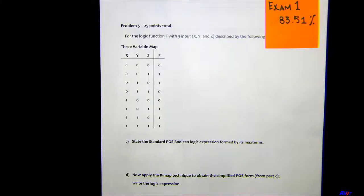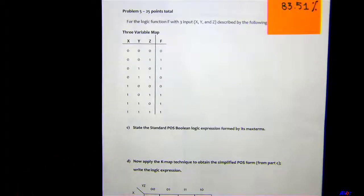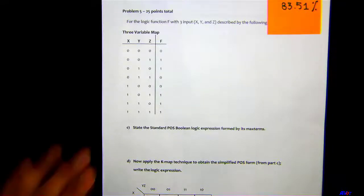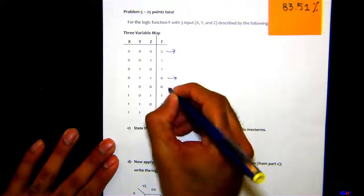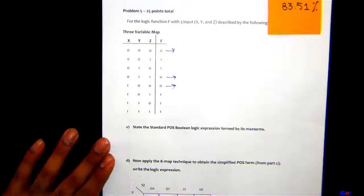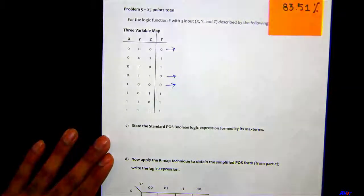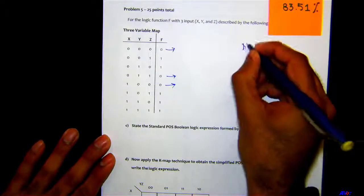Okay, let's get started. Problem 5 part C: state the standard POS Boolean logic expression formed by max terms, which were actually these ones right here. We look at these zeros in the truth table. Remember for the max terms...